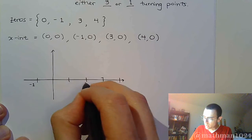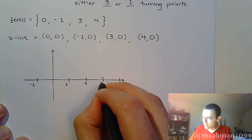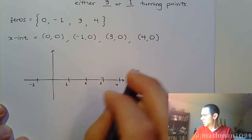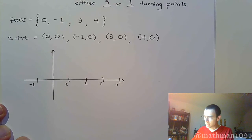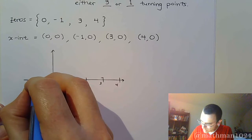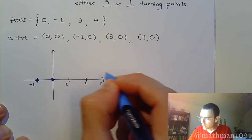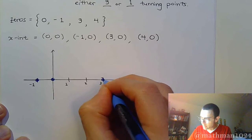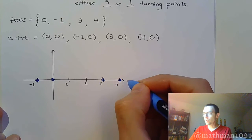Alright, so here's negative one, one, two, three, so on. So we have an x-intercept at negative one zero, zero zero, three zero, and four zero.